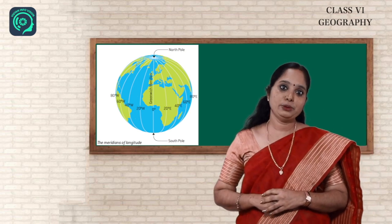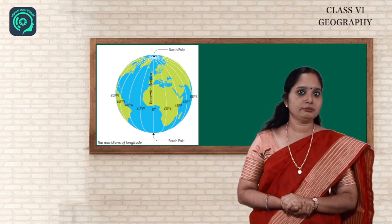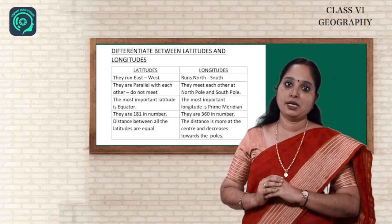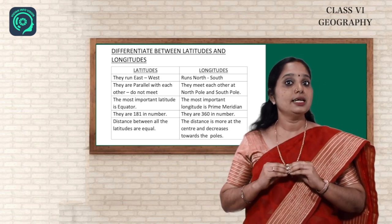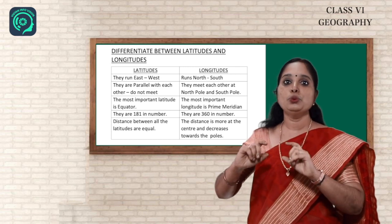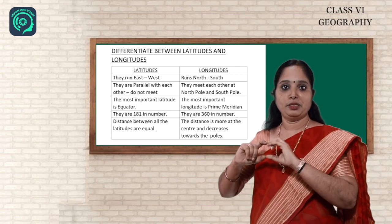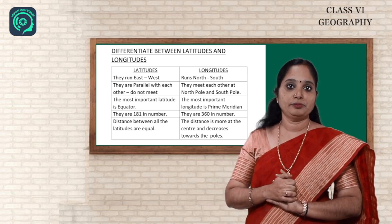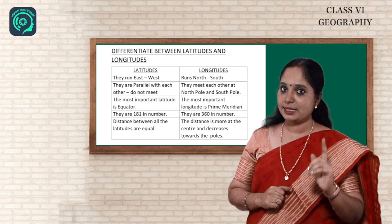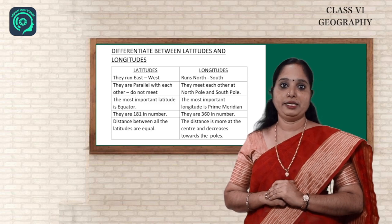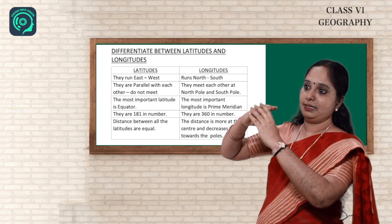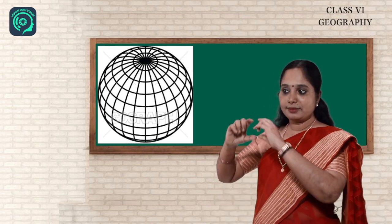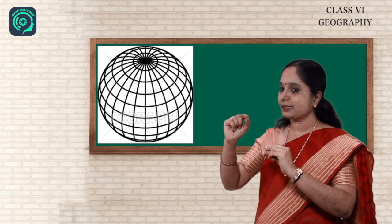Now that we have learned about latitudes and longitudes, let's do a comparative study. Latitudes run from east to west; longitudes run from north to south. There are a total of 181 latitudes and 360 longitudes. The distance between two latitudes is always the same, whereas the distance between longitudes becomes smaller and smaller as we go to the poles. The most important longitude is the prime meridian. Latitudes and longitudes crisscross each other and form a network called a grid. This grid helps us to locate the exact position of a place.